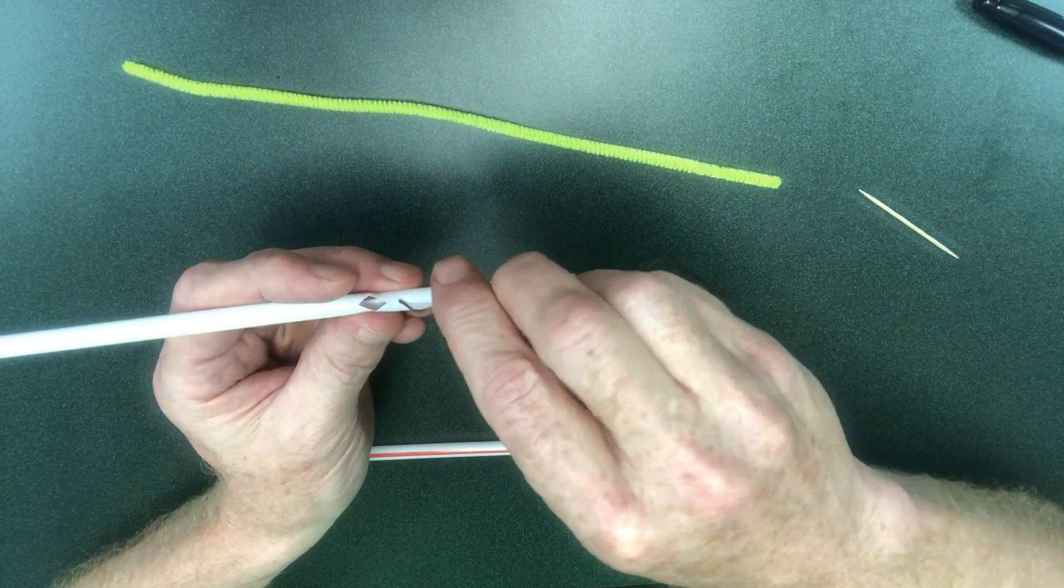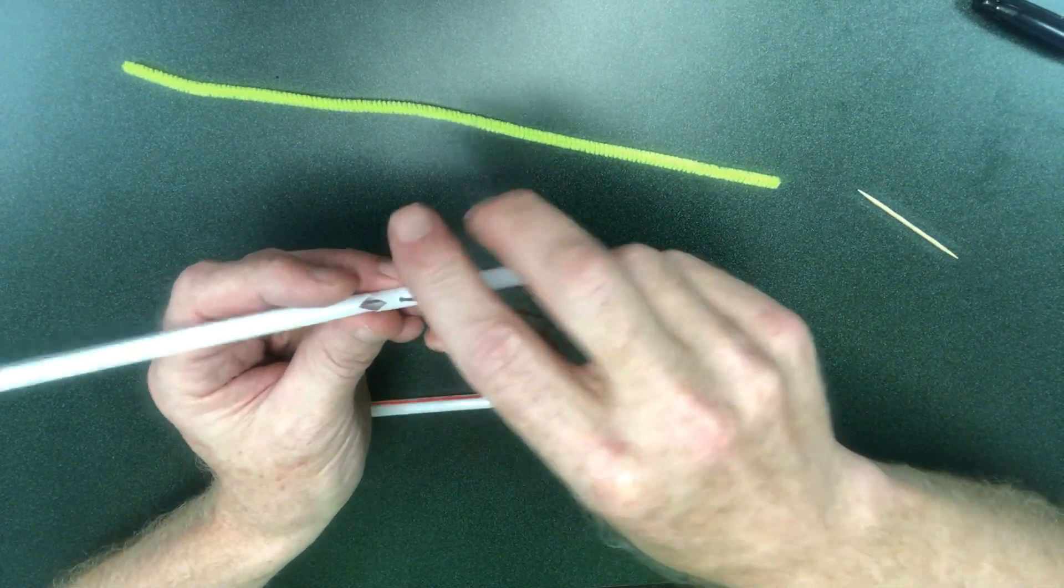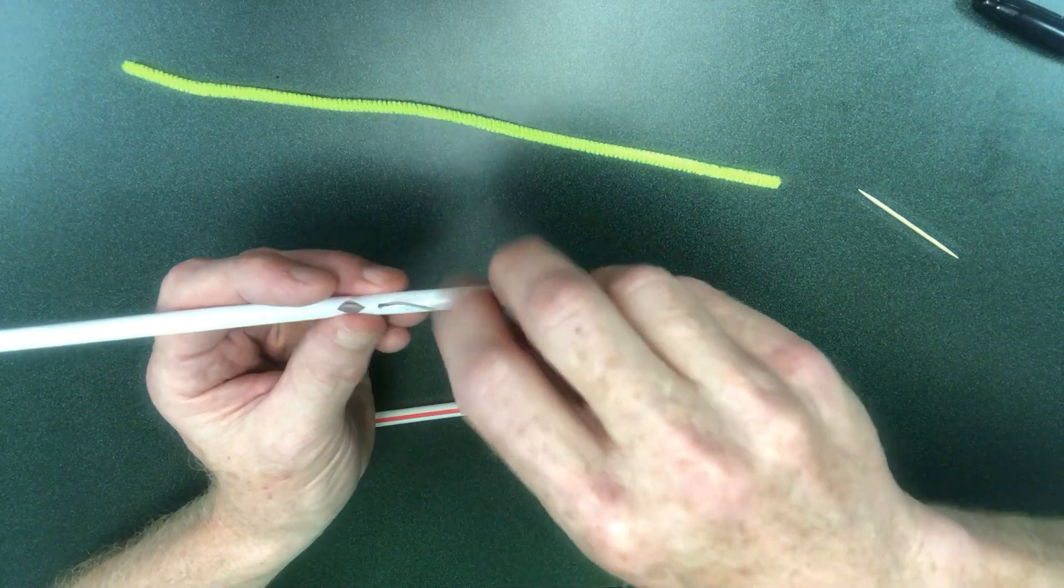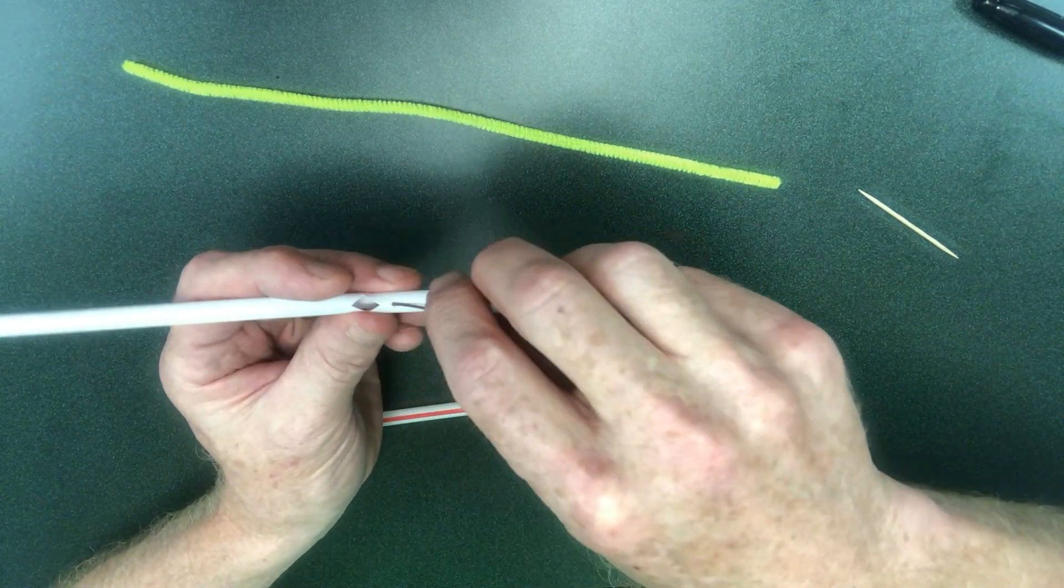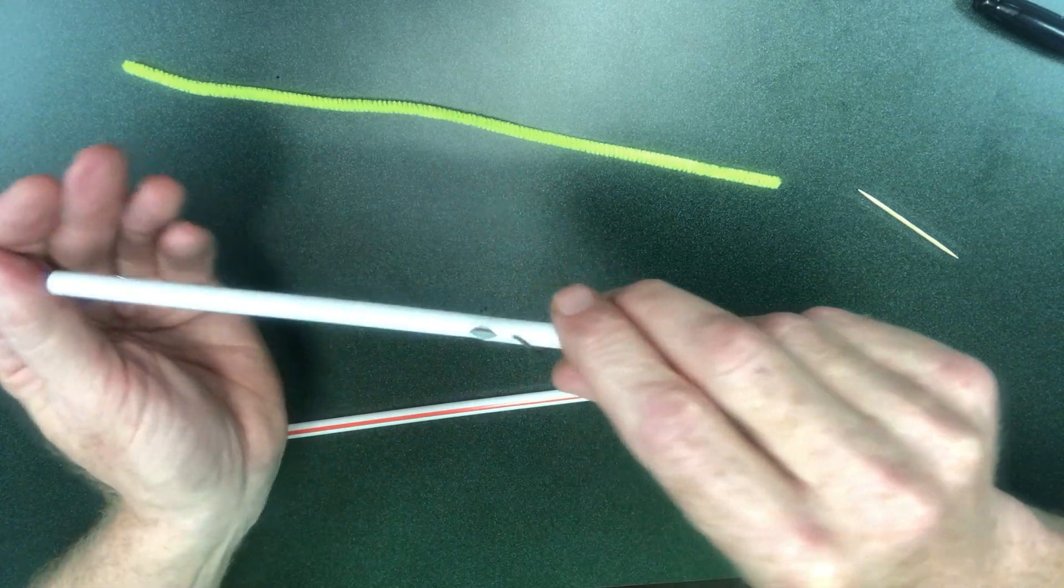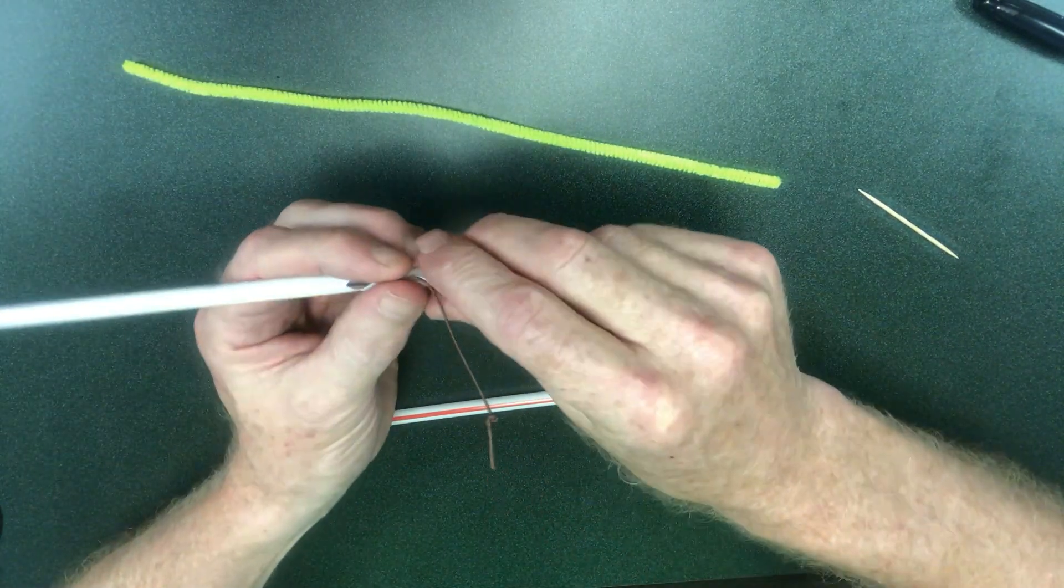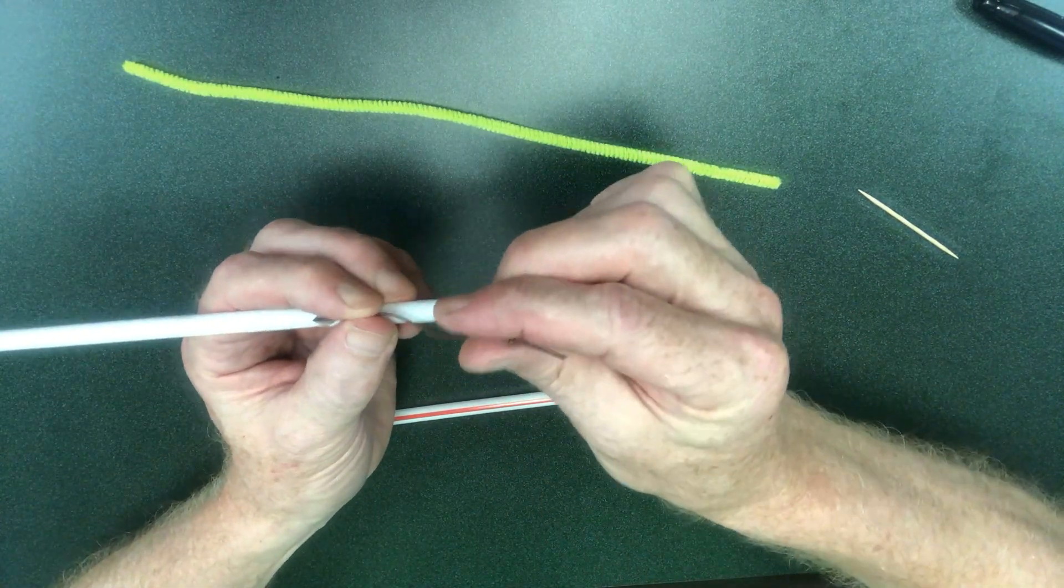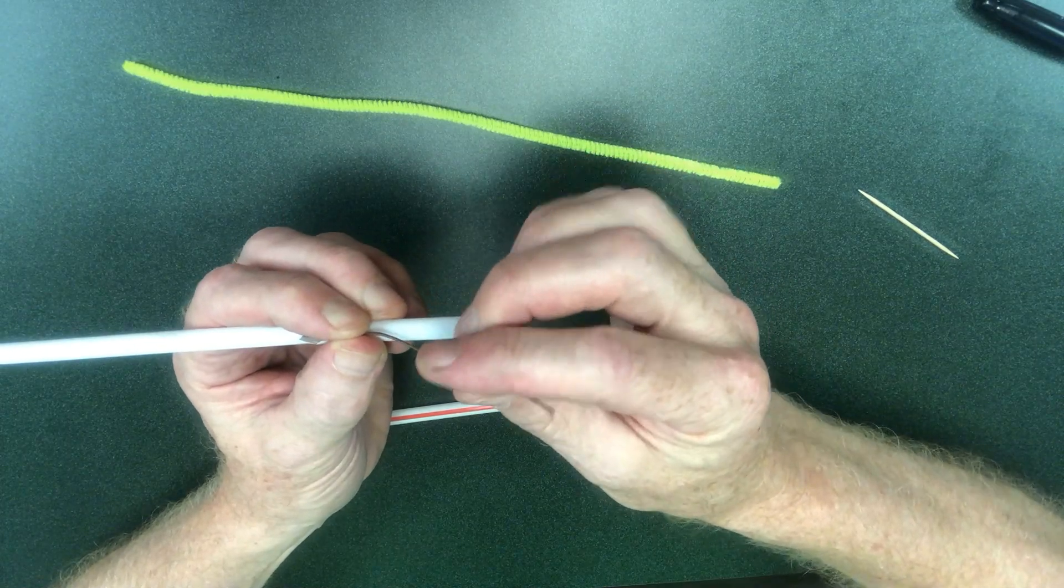Then slide it down the straw until it comes out the other end. This is going to serve as your tendon and there it comes out the other end. Then I can pull it, and what you want to do is go ahead and tie a little knot on this end of the tendon.